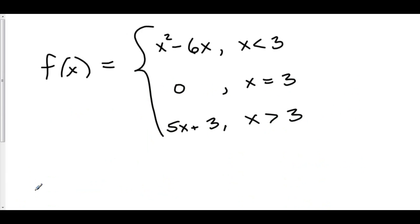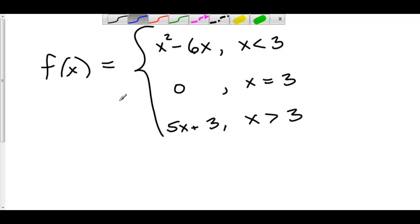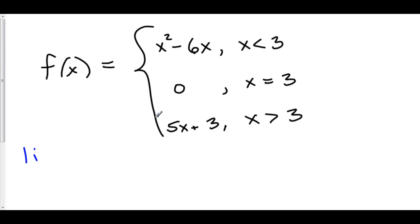Let's check another one. Here we have a left-hand side where x is less than 3, something going on at x equals 3, and something happening to the right of x equals 3. We know x squared minus 6x is continuous everywhere, 0 is continuous everywhere, and 5x plus 3 is continuous everywhere. So it comes down to checking our Frankenstein point, which in this case is 3.